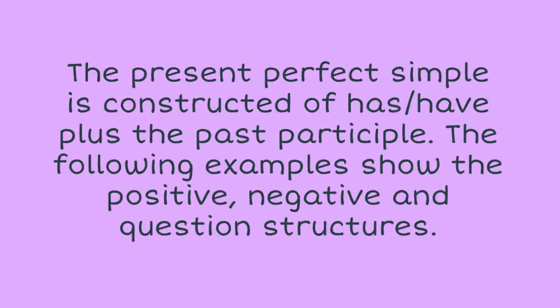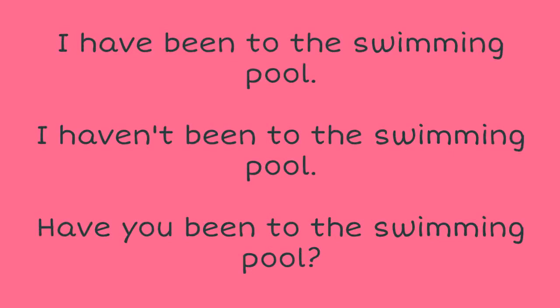The present perfect simple is constructed of has or have plus the past participle. The following examples show the positive, negative, and question structures: 'I have been to the swimming pool.' 'I haven't been to the swimming pool.' 'Have you been to the swimming pool?'